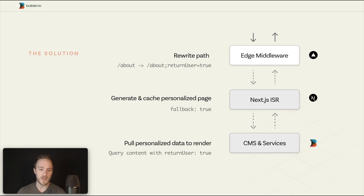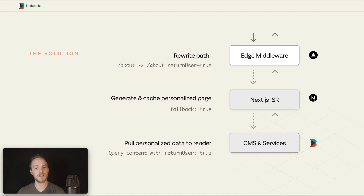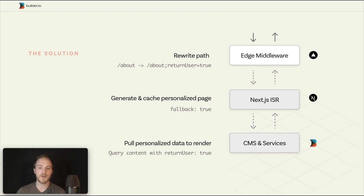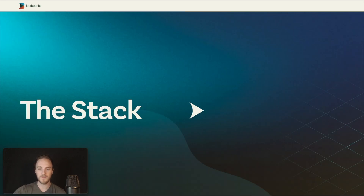So the vast majority of requests — 99.99% — are going to get instant fast cache responses because of the static generation that happens in real time. And only an extreme minority of people visiting with a unique combination of parameters will go through the full circle.